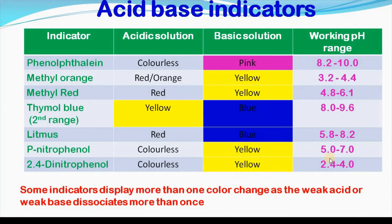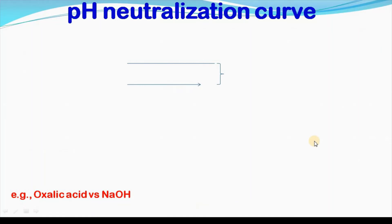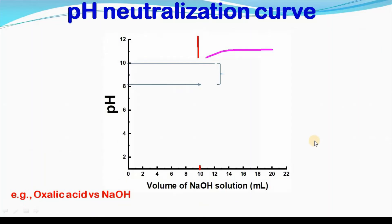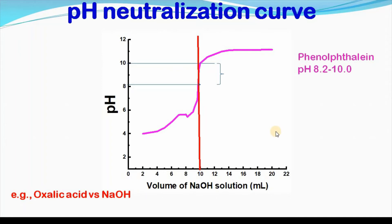Some indicators exhibit more than one color. Here is the pH neutralization curve for titration of oxalic acid with sodium hydroxide. We can see that phenolphthalein's working pH range and thymol blue's range are marked on this curve.